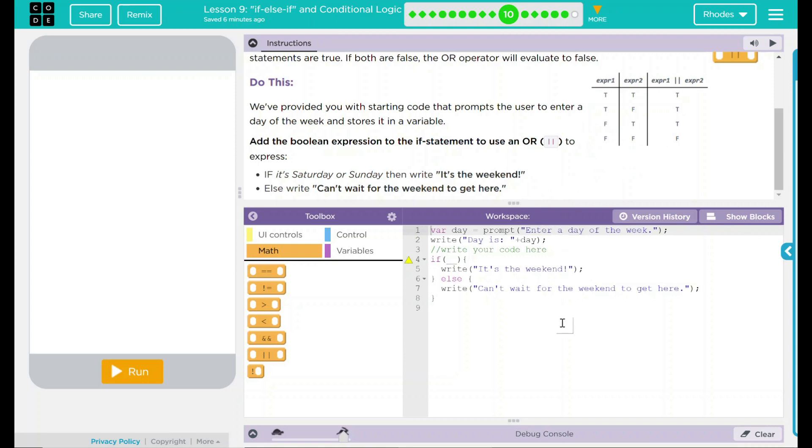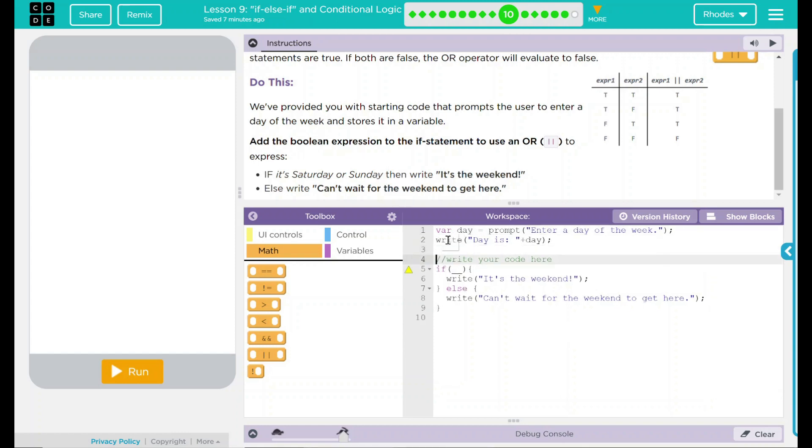Let's go ahead and take a look at our code. Over here, we have a variable, which is day, and we have a prompt which is going to ask the user to enter a day of the week. And then we're going to write day is whatever the day is.